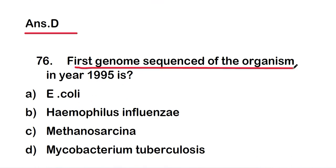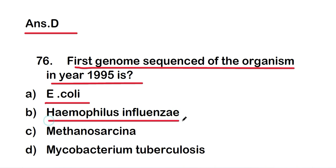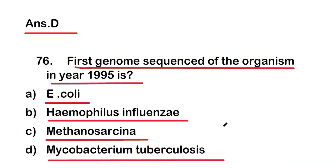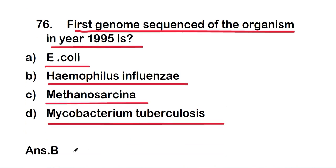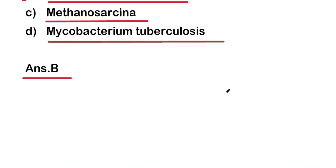Next question: the first genome sequence of an organism in the year 1995 is — option A, Escherichia coli; option B, Haemophilus influenzae; option C, Methanosarcina; or option D, Mycobacterium tuberculosis. The right answer is option B — Haemophilus influenzae was the first organism whose genome was sequenced in 1995.